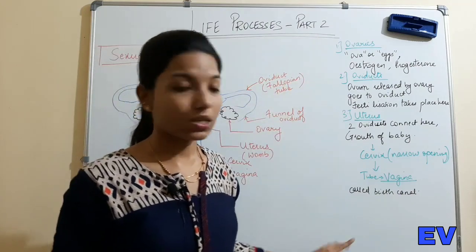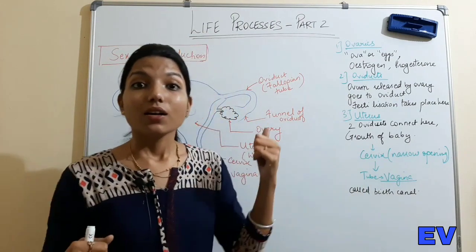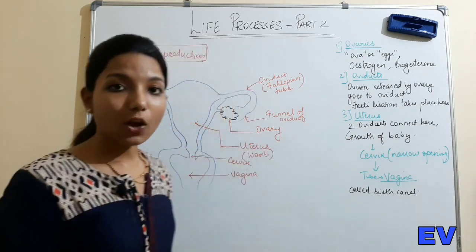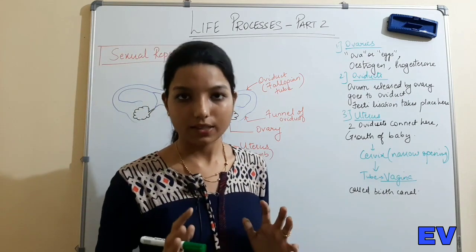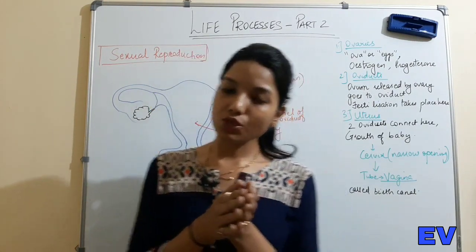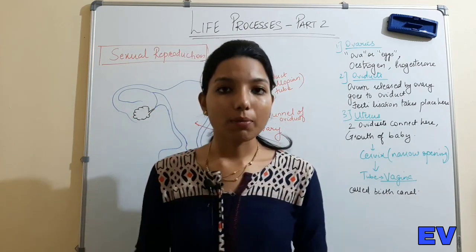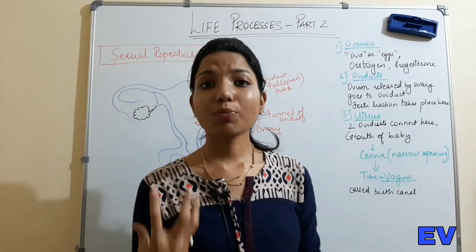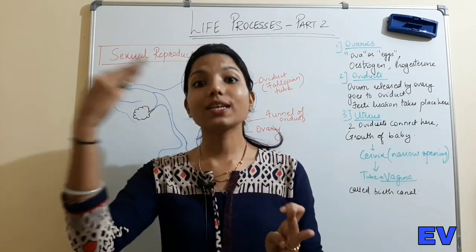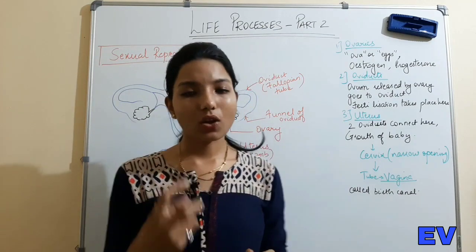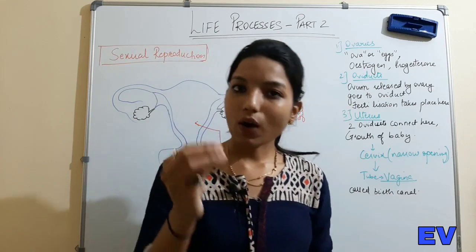These points are very important. This completes sexual reproduction in human beings. Now let's look at fertilization. Fertilization is the process of union of sperm and ovum to form a zygote. Then from the zygote, an embryo is formed. Every month a female releases one egg.